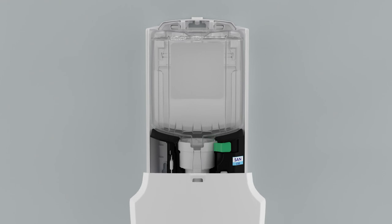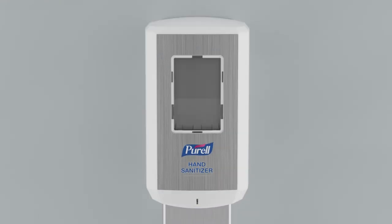Close the dispenser cover and look for the green status light. When the green light blinks, the dispenser is ready to use. Prime the dispenser by placing your hand underneath to dispense product.